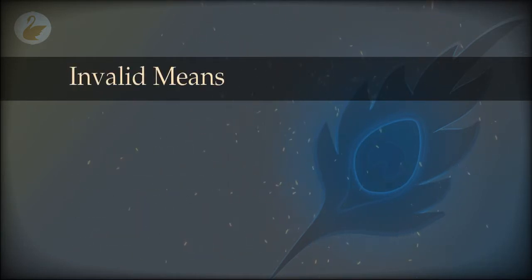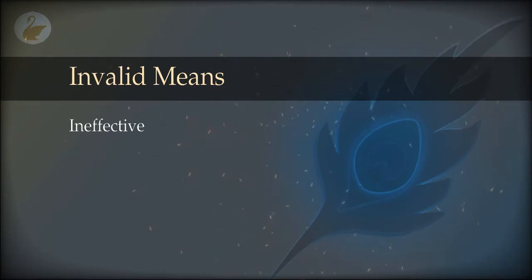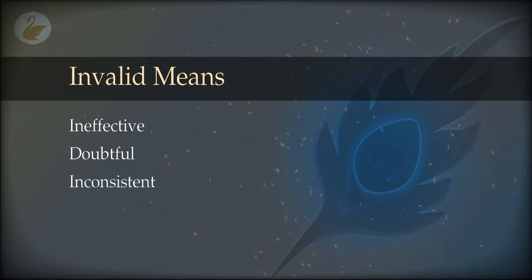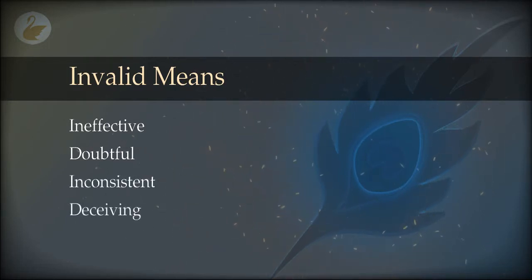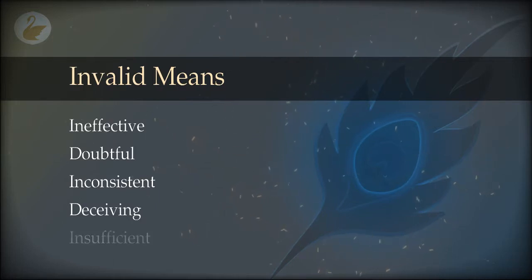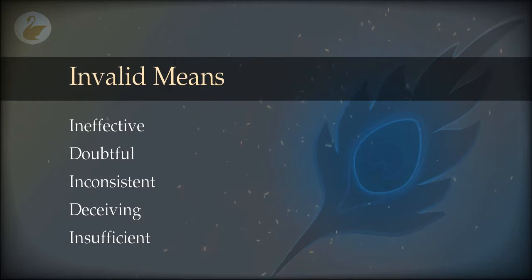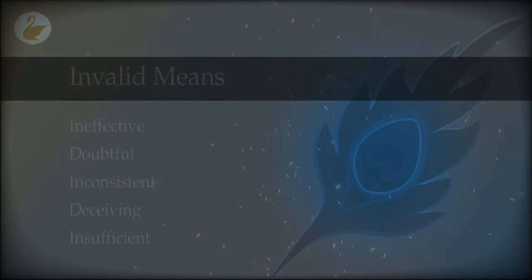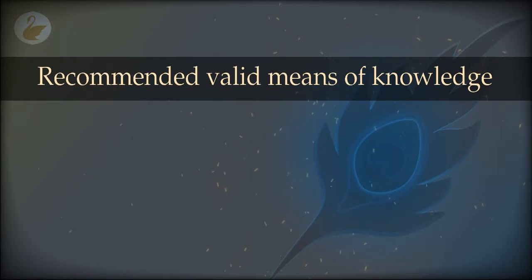In contrast to the valid means, there are invalid means which are ineffective — we don't get knowledge, and even if we get something, we are not sure, we doubt it. Sometimes they provide knowledge, sometimes they do not. They are inconsistent. They can be deceiving and they are not sufficient means — that means you need to go and find more evidence to complete the knowledge. So we are going to look at some examples and particulars of both classes.